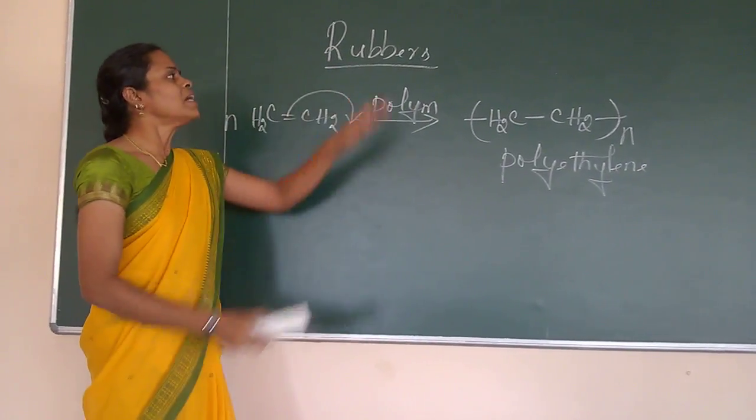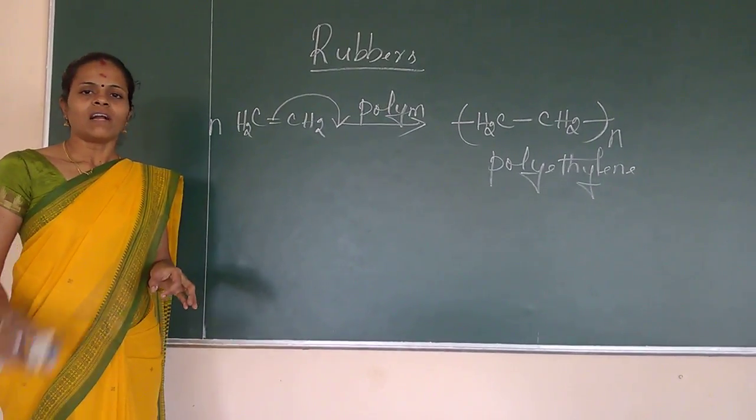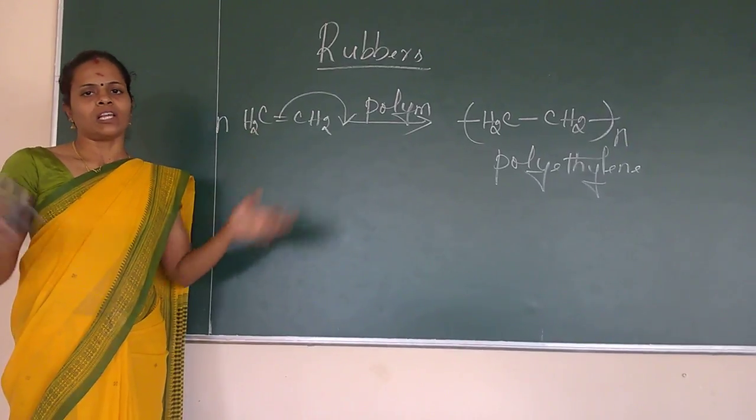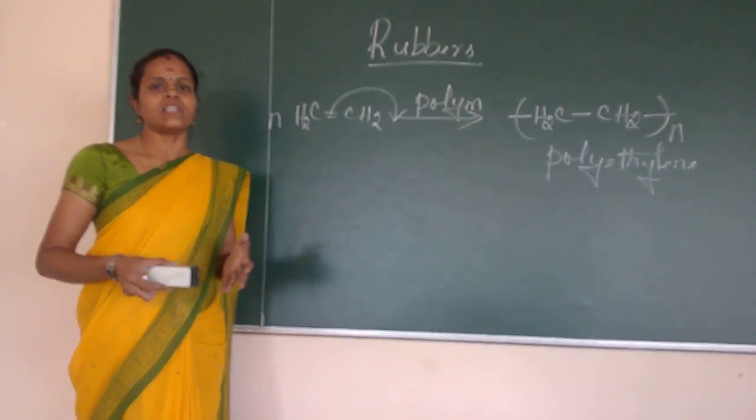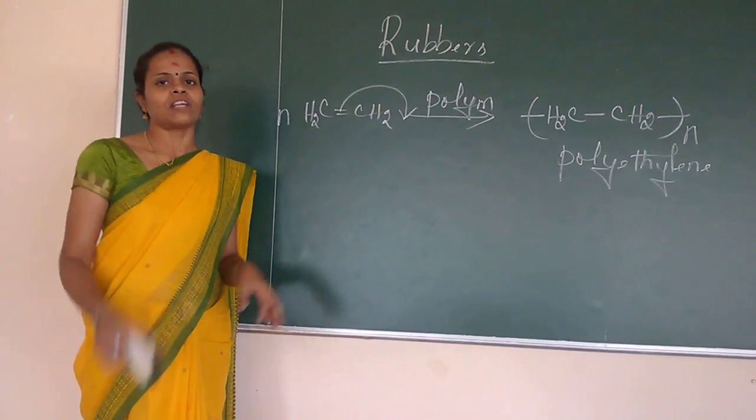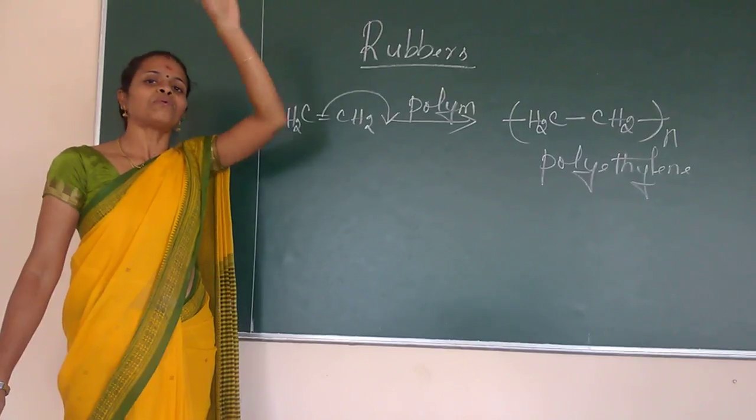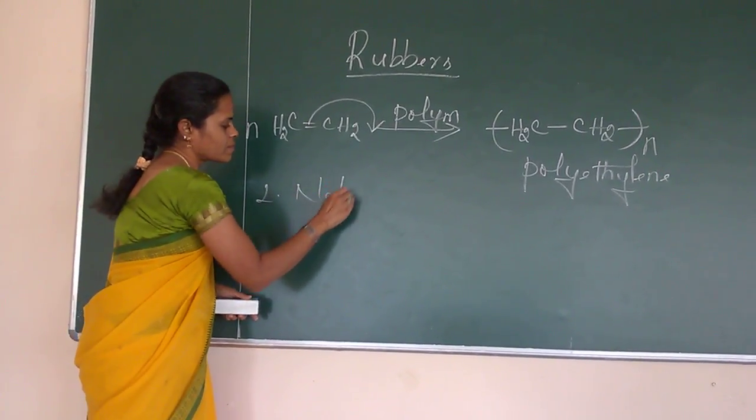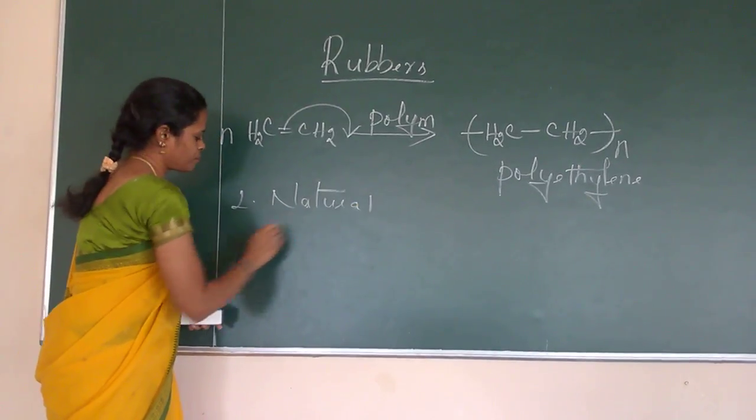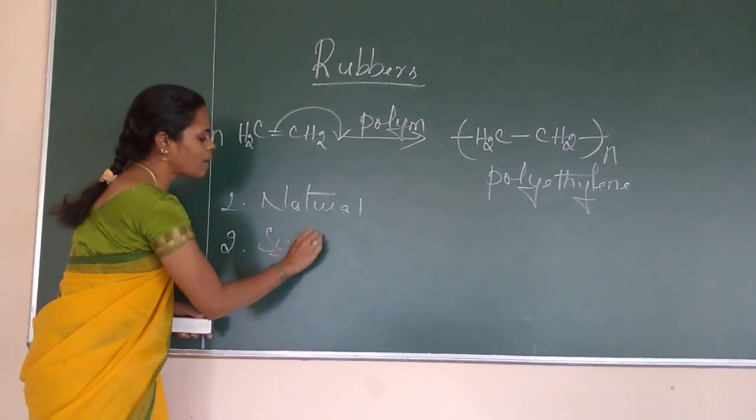So rubber is one kind of polymer. So now what is mean by rubber? Rubber is a macromolecule and it is also polymer non-crystalline structure. It is having a high molecular weight. So these rubbers is two types.